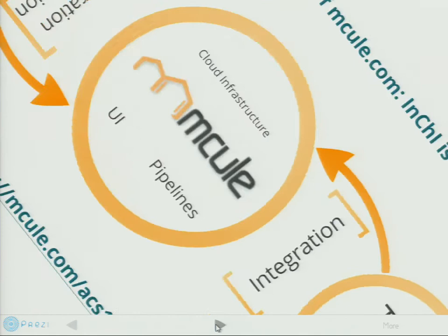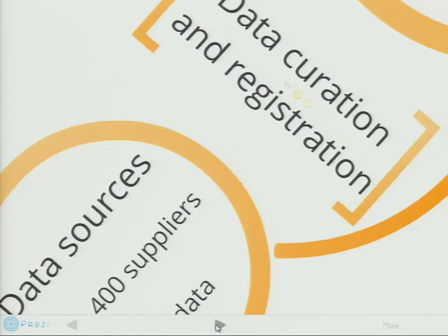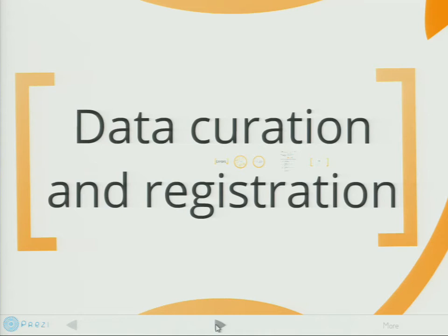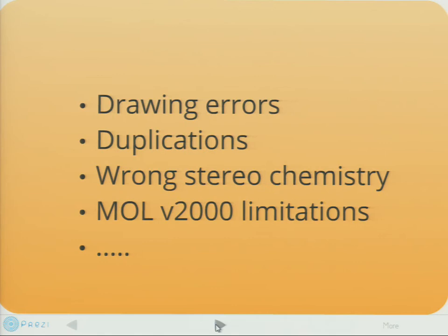Tools without data are not very useful, so we have to build up a very large amount of data from various sources — mainly from chemical suppliers and open data sources. This amount of data requires a large amount of curation and a registration system, because we have errors everywhere in these data sources: errors in drawings, duplications, and various others. My favorite example is when you open a structure drawing tool and you can see only one structure, but if you look into the mol file you can realize it's actually two structures with the same 2D coordinates overlapping each other — something people cannot recognize, but we can.